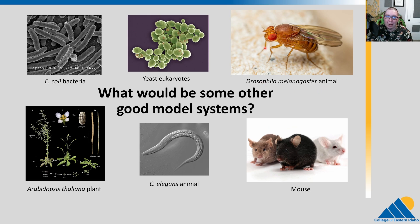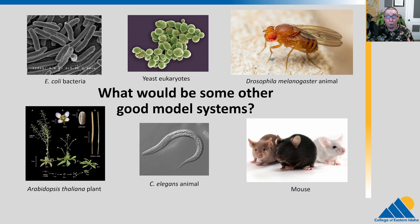Drosophila melanogaster — this is an animal, it's a fruit fly. You might not think it, but very, very critical in the history of genetics. We will see that Mendel worked with peas, but people were skeptical as to whether that applied to animals or not. The fruit fly was very critical in confirming that, indeed, Mendel's rules were followed in animals, and we'll talk a lot about fruit flies in this course.